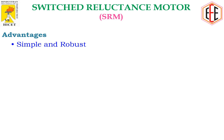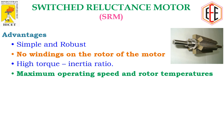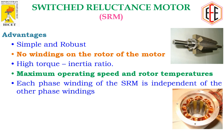The advantages of the SRM include its very simple and robust construction. There are no windings on the rotor, as seen in the pictorial diagram. It has a high torque-to-inertia ratio, maximum operating speed, and lower rotor temperature because there are no permanent magnets or coils on the rotor, enabling high-speed operation. Each phase winding of the SRM is also independent of the other phase windings.